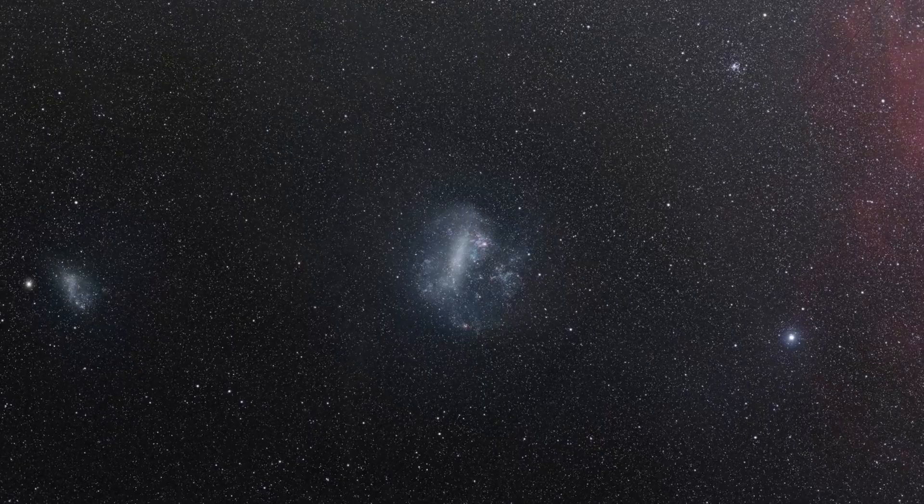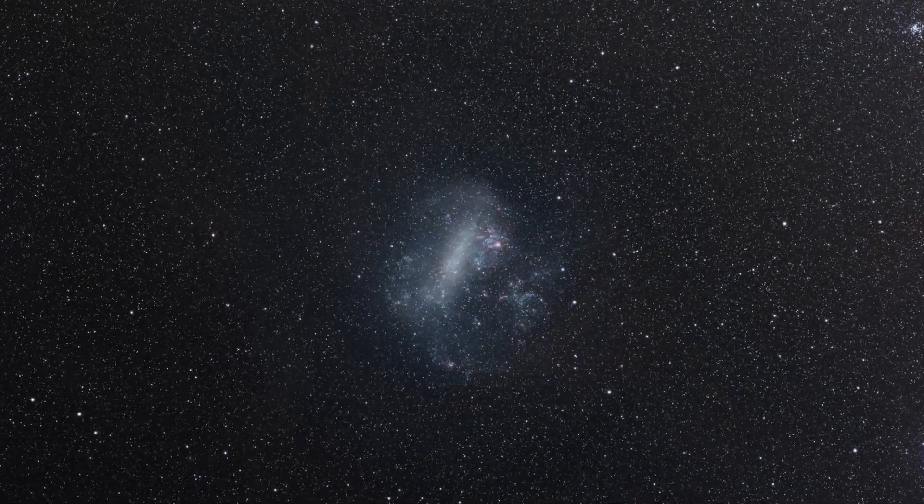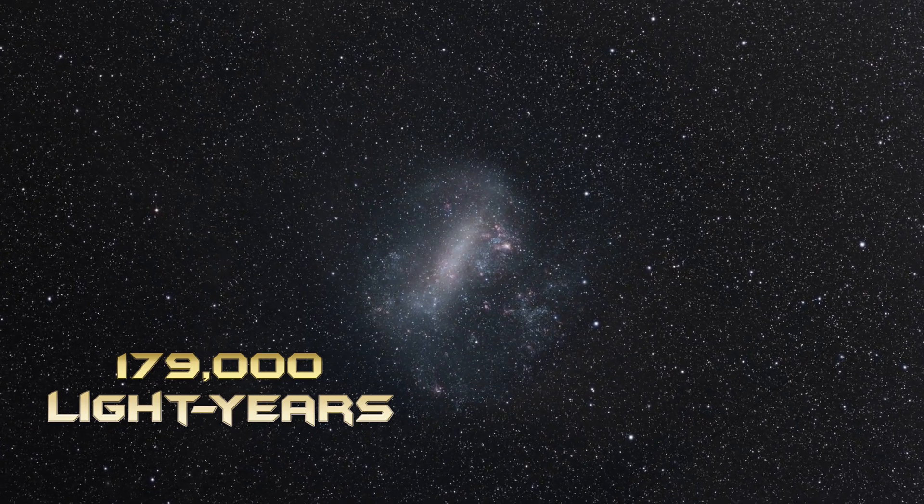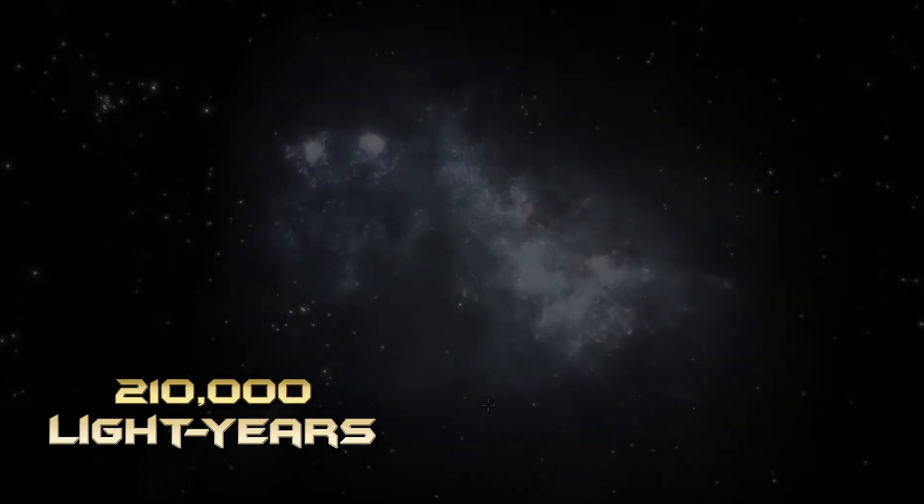Basically, they are unstable dwarf galaxies that orbit the Milky Way galaxy. The large Magellanic cloud is a bit closer to us at a distance of 179,000 light years away from the Milky Way galaxy, while the small Magellanic is about 210,000 light years away.